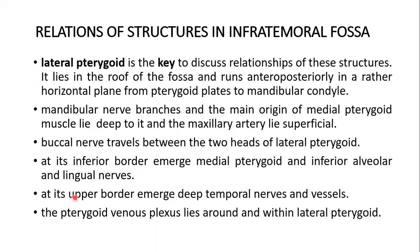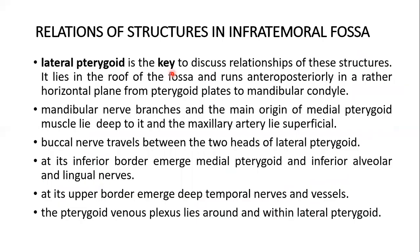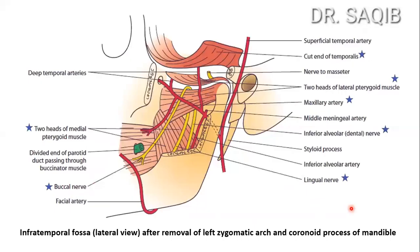At the upper border of the lateral pterygoid, the deep temporal nerves and vessels emerge. The pterygoid venous plexus lies around and within the substance of the lateral pterygoid muscle.